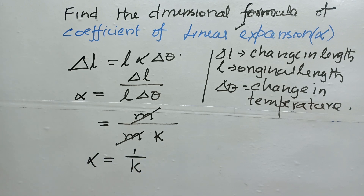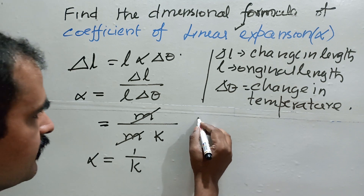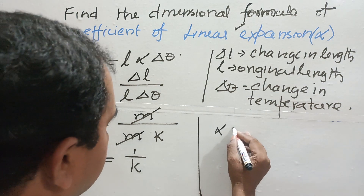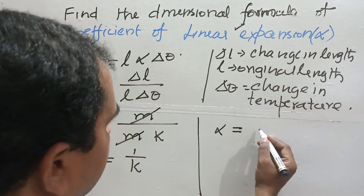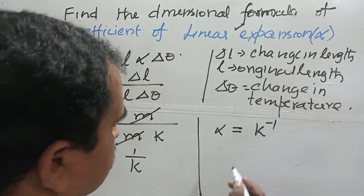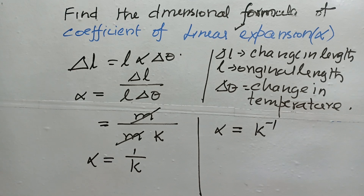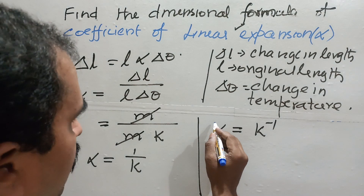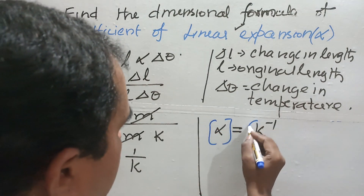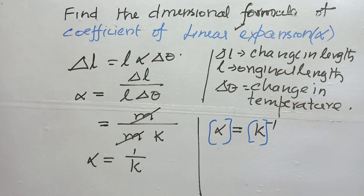The unit of alpha is K inverse. There is absence of mass, absence of length, and absence of time — only temperature theta is present. Therefore, the dimensional formula of alpha is K to the power minus 1.